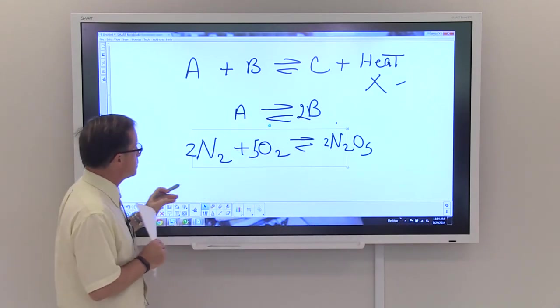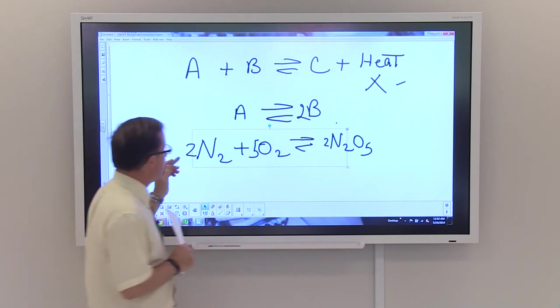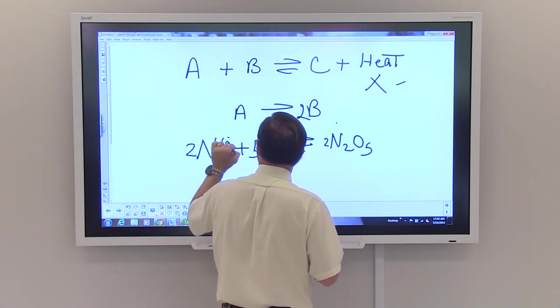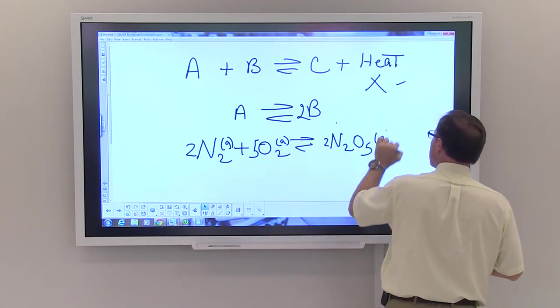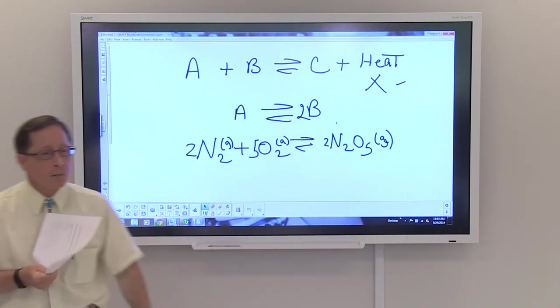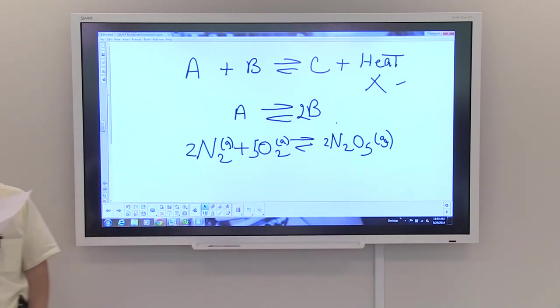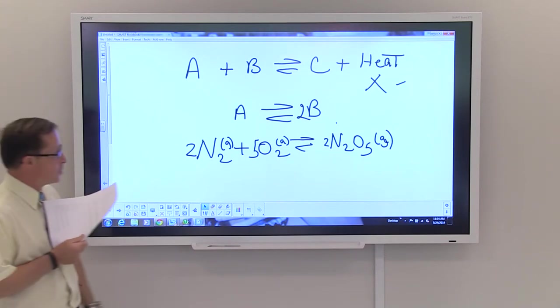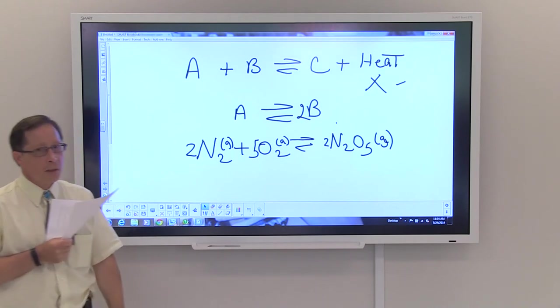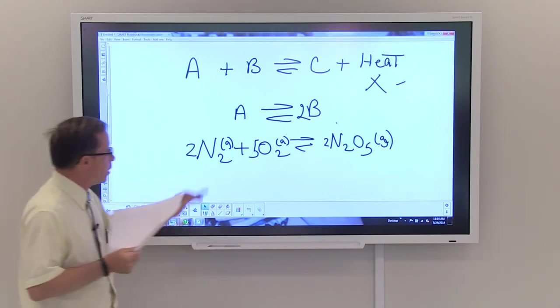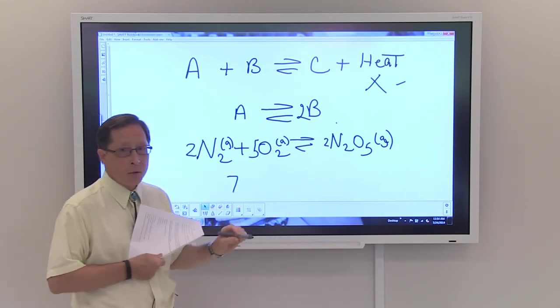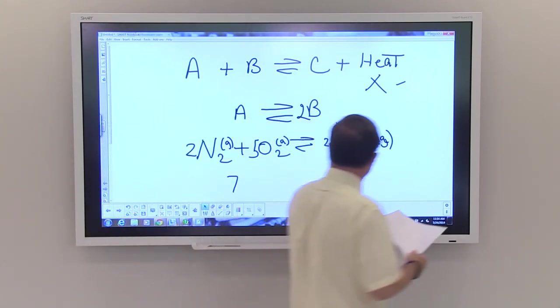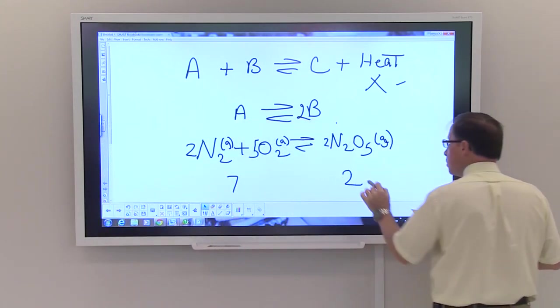What if we had this equation? This is an equilibrium and all of these are gases. How would pressure affect the reaction if we have gases? Here's something to think about. On the left hand side of the equation we have seven molecules of gas. On the right hand side we have two molecules of gas.